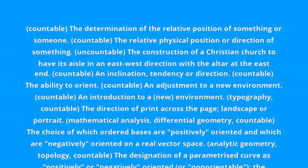Uncountable: the construction of a Christian church to have its aisle in an east-west direction with the altar at the east end. Countable: an inclination, tendency, or direction. Countable: the ability to orient.